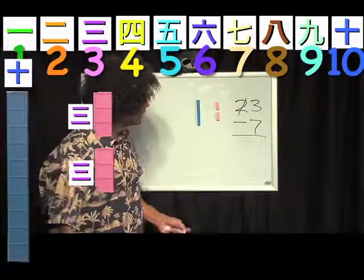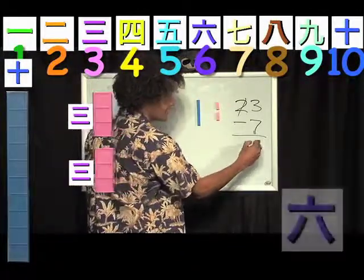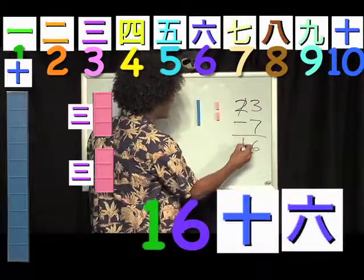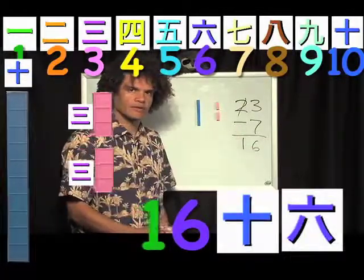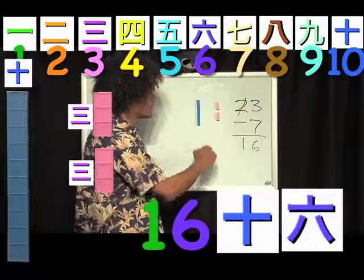So again, all I've done is add 3 and 3 to get 6. I didn't have enough there, so I took away that 7 from one of the 10s. 16.